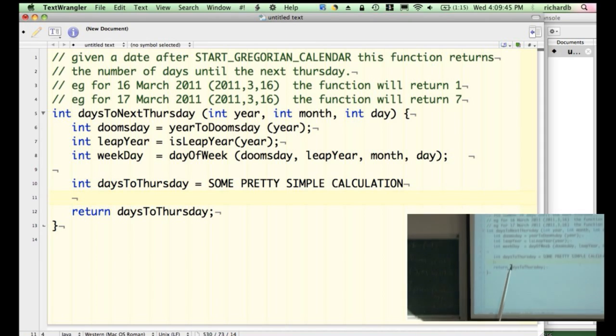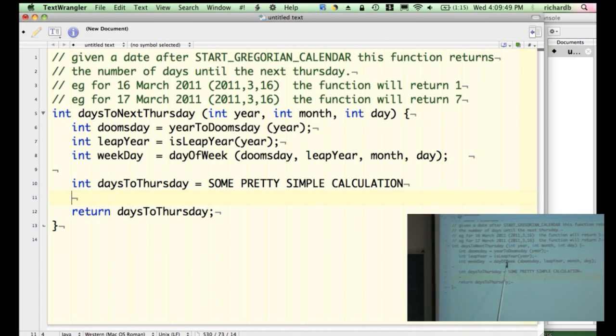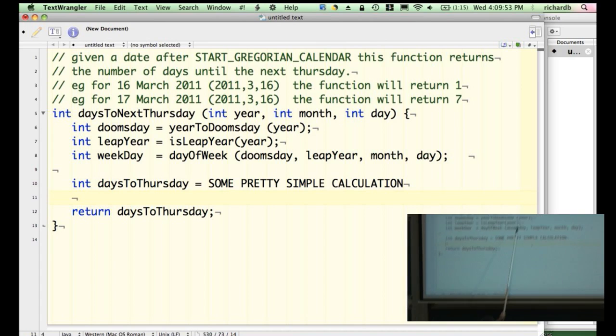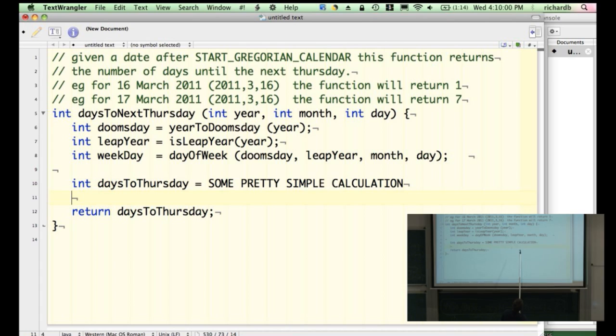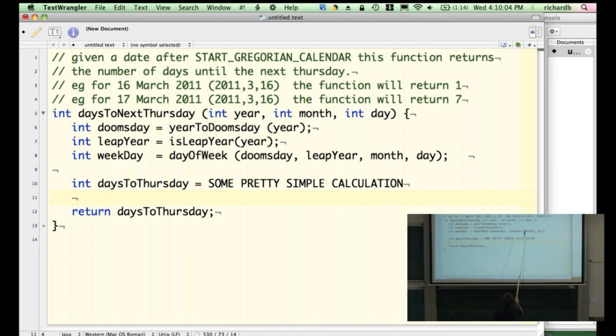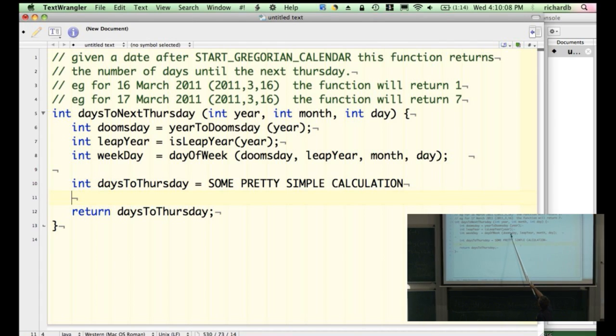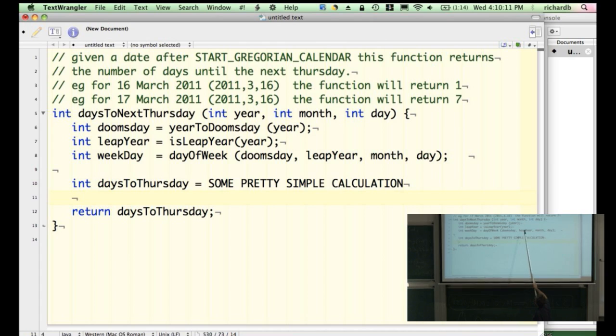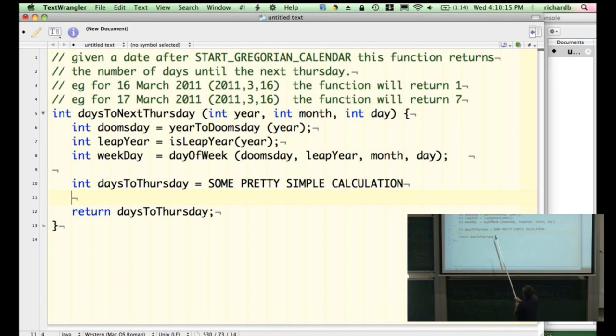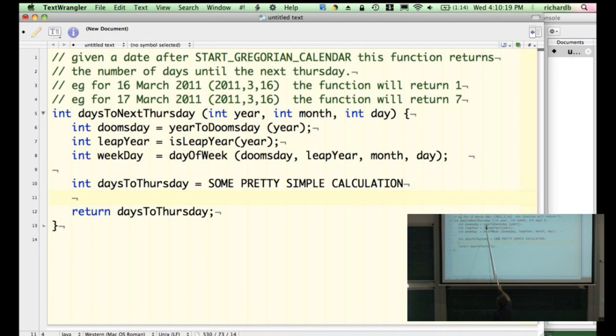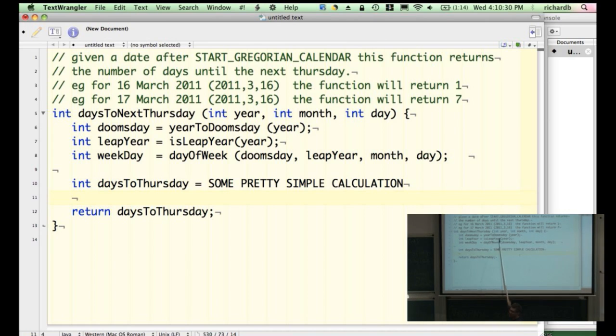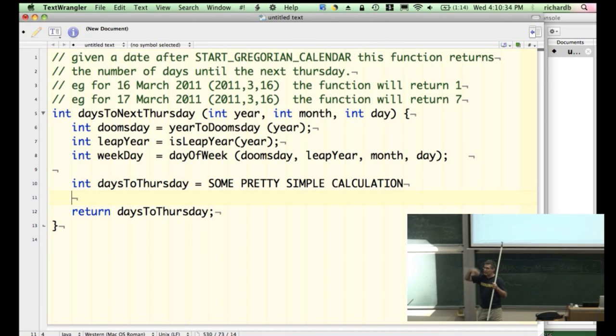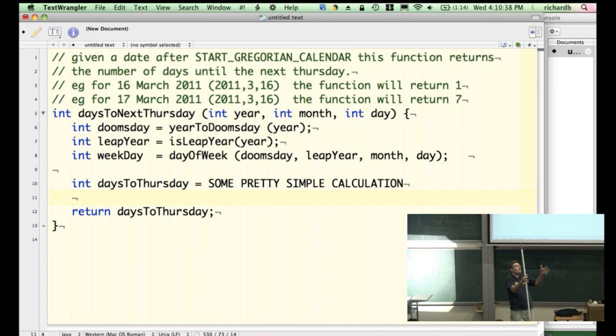Now someone asked how we link functions together, so here's how you do it. When I call dayOfWeek to work out the day of the week, I need to know what the doomsday of that year is. I need to know if that year's a leap year or not. I need to know the month of the date, and I need to know the day of the date. Well, I already know the month and the day because they were passed in to me, but what I don't know is the doomsday for that year, and I don't know if that year's a leap year or not. So I better calculate those two things. How do I calculate those two things? Easy, I'll create a variable called doomsday, and I'll say it's equal to the doomsday of the given year, and I'll call some function that works that out for me.